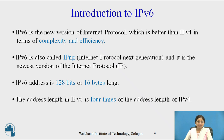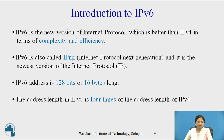IPv6 has an address space of 128 bits, or we can say it is 16 bytes long. The address length in IPv6 is four times the address length of IPv4. In IPv4, address space is 2 raised to power 32. Address space means the number of addresses allotted by the protocol. So 2 raised to power 32 is more than 4 billion addresses allotted by IPv4.